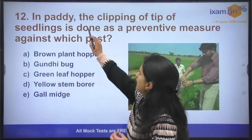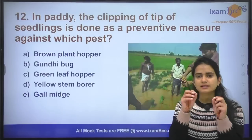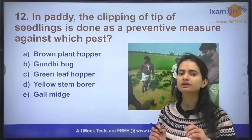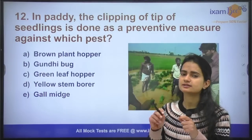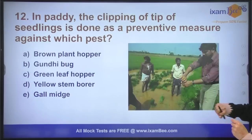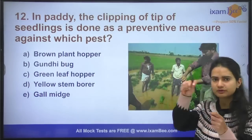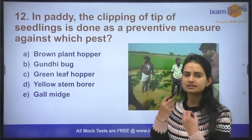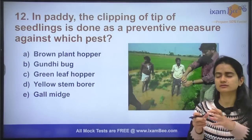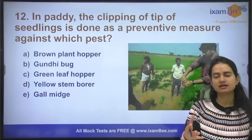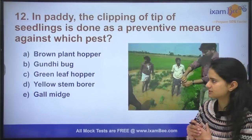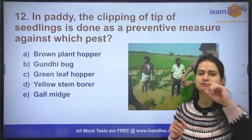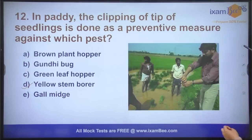Question number twelve: padding or clipping — basically, when we transplant from nursery to the main field, we remove the seedlings from the nursery; this is called clipping. This clipping is used as a preventive method against which insect pest? The answer is yellow stem borer, because yellow stem borer lays its eggs on the top of the seedlings.